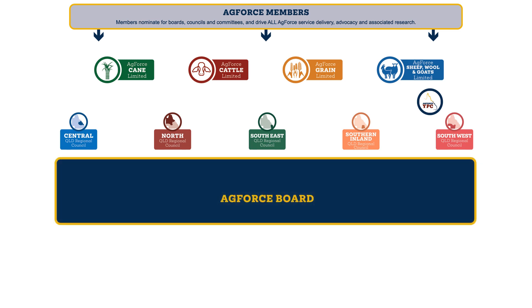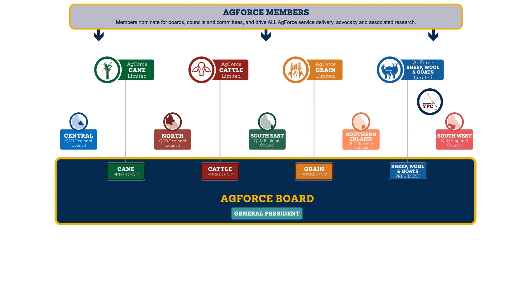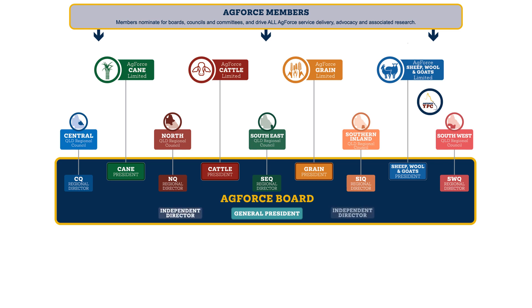Then there is the AgForce Queensland Farmers Board. We have an elected general president, and each of the four commodity boards — the commodity president sits as a director on the AgForce board. Similarly, for each of the five regional councils, there is a regional director sitting on the AgForce board. So the AgForce board consists of the general president, four commodity presidents, five regional directors, plus two independent board directors.